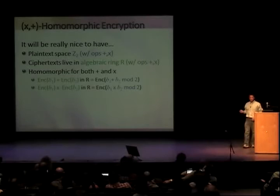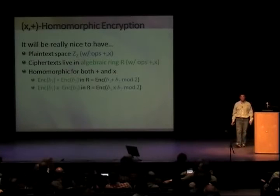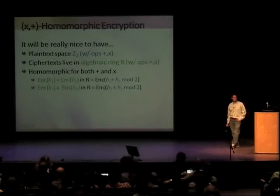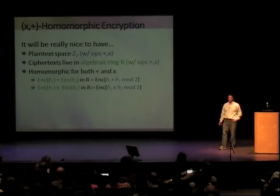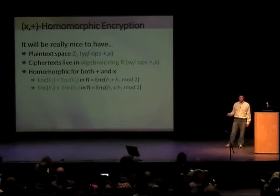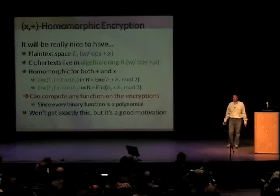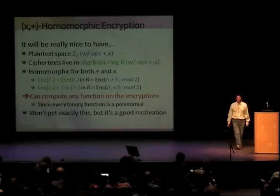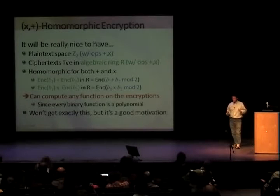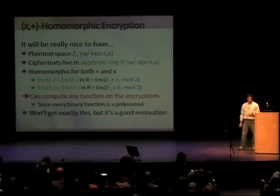What we really want is something like this: plaintext space Z2 — bits — and ciphertexts living in some algebraic ring R with its own addition and multiplication, such that adding two ciphertexts gives an encryption of the XOR of the plaintext bits, and multiplying two ciphertexts gives an encryption of the AND. If we had something like that, we could evaluate any function, because any function can be written as a Boolean circuit, any Boolean circuit as a polynomial, and once you can add and multiply, you can compute polynomials.